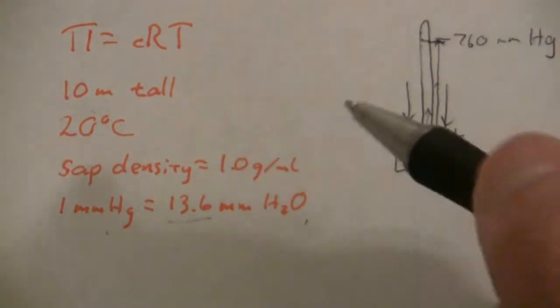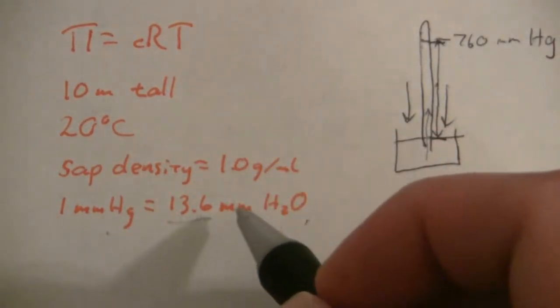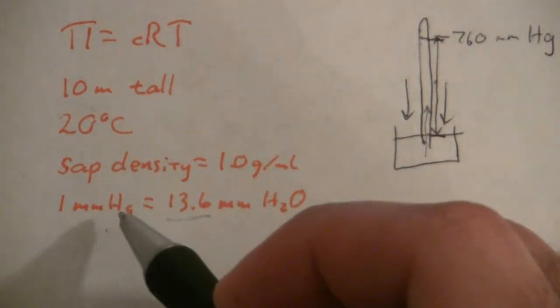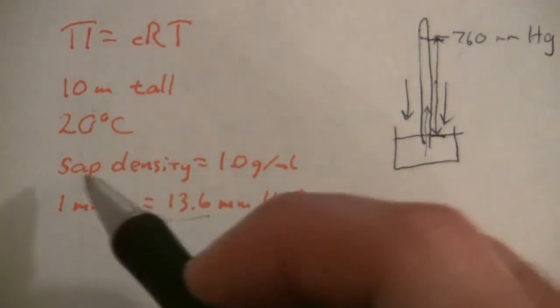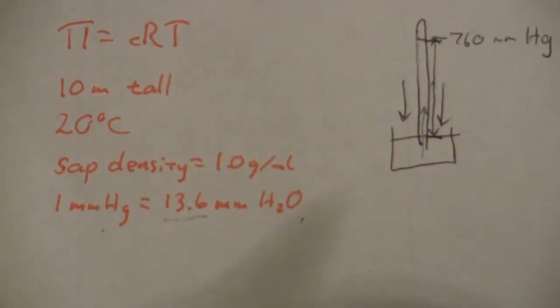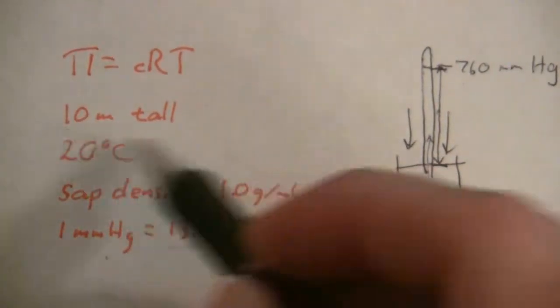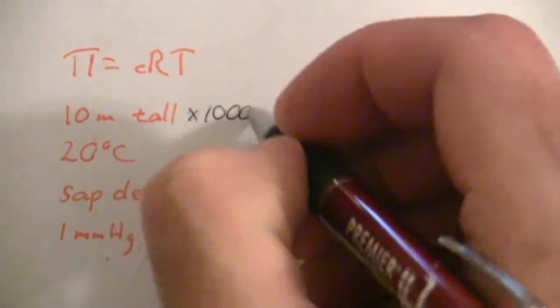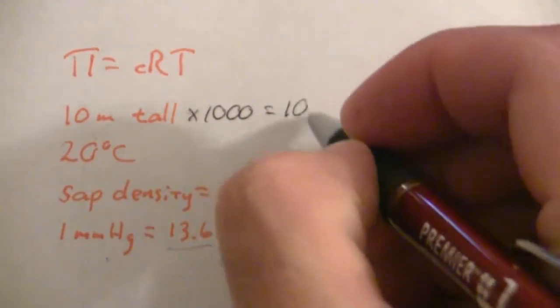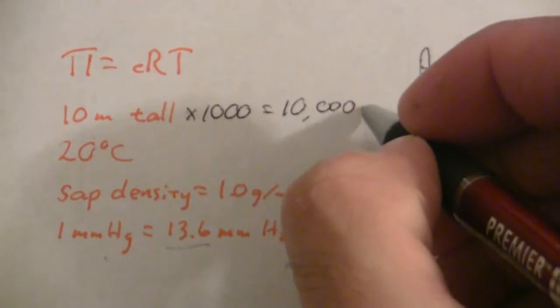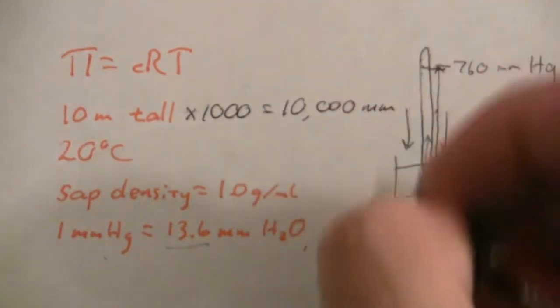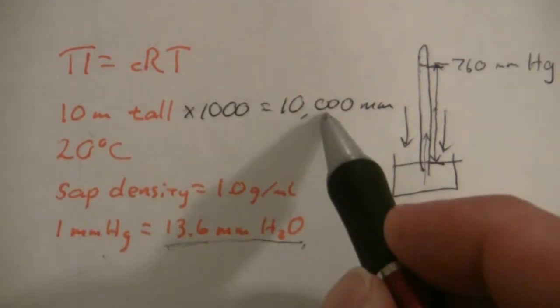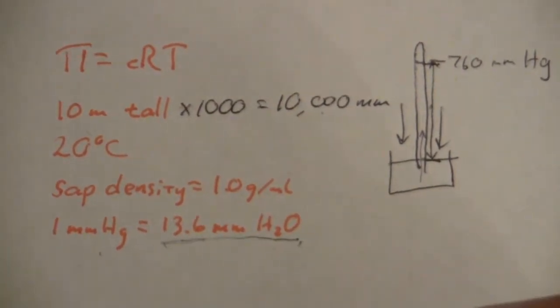The pressure is going to be in millimeters of sap, which one millimeter of mercury is equal to 13.6 millimeters of the sap. And we have a 10 meter tall tree, so multiply that by a thousand and you get 10,000 millimeters. That's the length of the column.